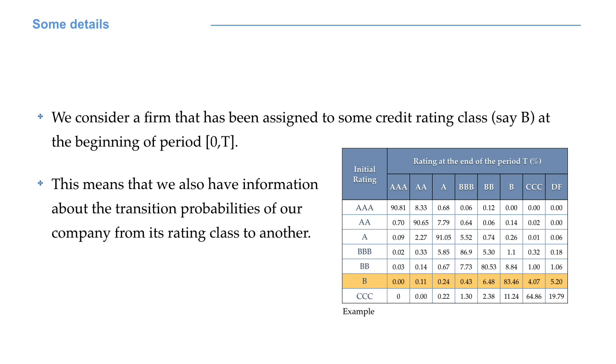We consider a company that has been assigned to some credit rating class, say B, at the beginning of period zero to capital T. This means that for this company we also have information about the transition probabilities to other rating classes and the probability of default by the end of the period. These transition probabilities can be computed using historical data or other techniques. Do you remember how to read a transition matrix? If the answer is no, go back to week 4.